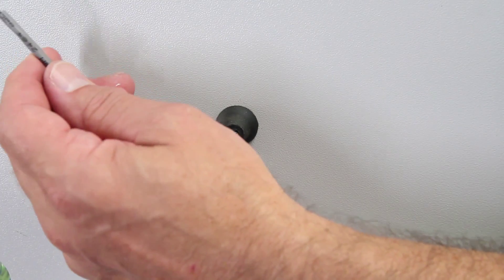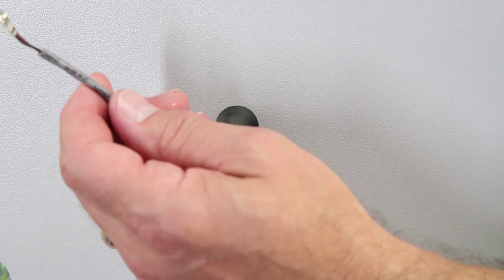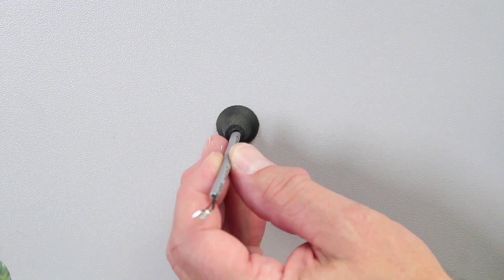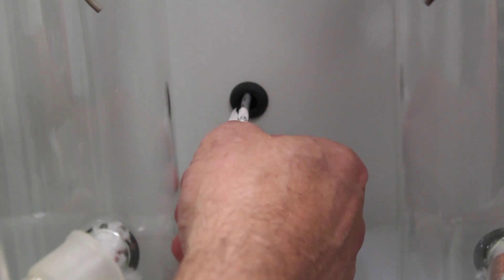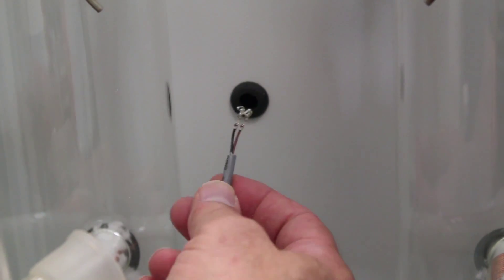Now that we have it disconnected and we have all our ties disconnected, we're going to pull the old thermistor back through the grommet from the front side and simply work the wires through and help them a little bit get through the grommet and then pull it back out through the front.